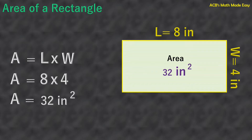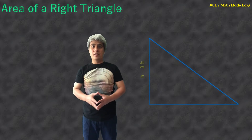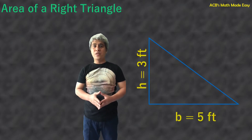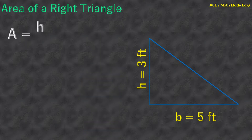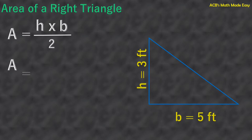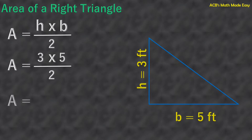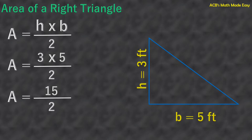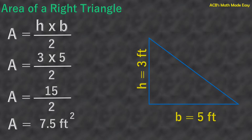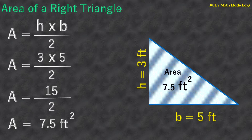Our next example is the area of a right triangle. This is our right triangle. Its height is 3 feet and its base is 5 feet. The formula will be: area equals height times base divided by 2. So, area equals 3 feet times 5 feet divided by 2. Area equals 3 times 5 equals 15, divided by 2. The answer is 7.5 squared feet. This is the area of the right triangle — 7.5 squared feet.